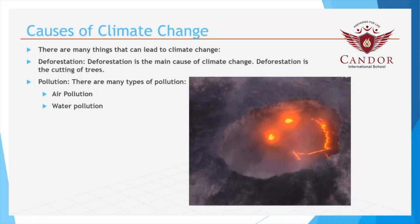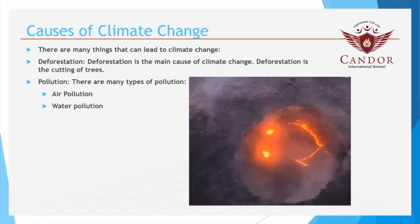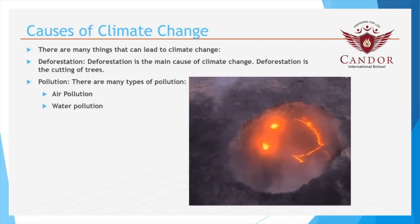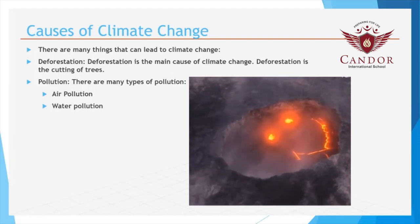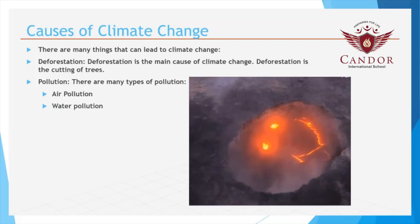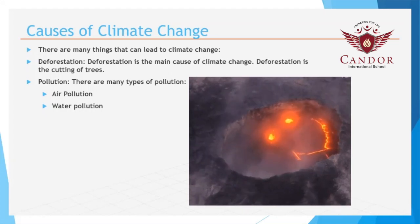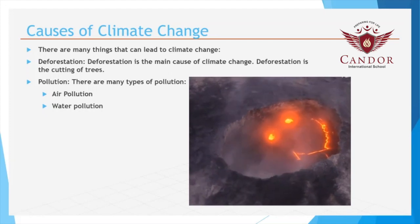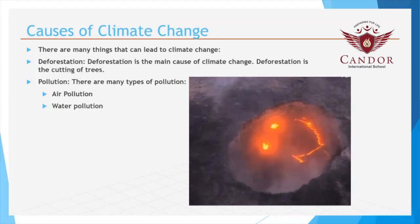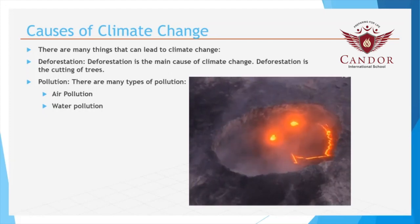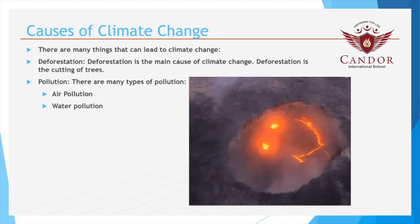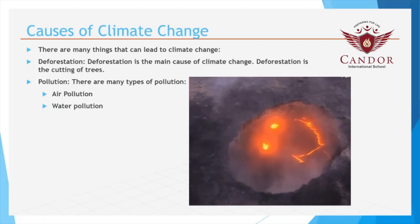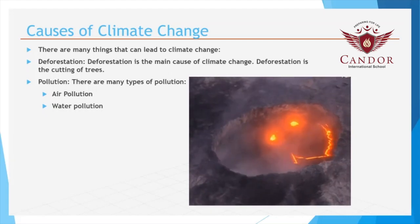Human causes: The Industrial Revolution in the 19th century saw the large-scale use of fossil fuels for industrial activities. Carbon dioxide is undoubtedly the most important greenhouse gas in the atmosphere. Changes in land use patterns, deforestation, land clearing, agriculture and other activities have all led to a rise in the emission of carbon dioxide.